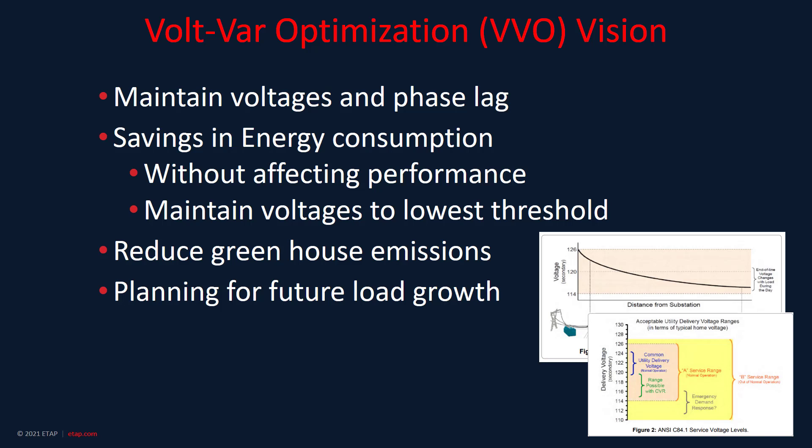The principle of CVR is that savings in energy consumption are achieved by reduction of voltage level without affecting the performance of the customer's devices, demand, and minimizing system losses. This means that total power demand can be reduced by operating in the lower allowable range of the voltage, as shown in figure number two.